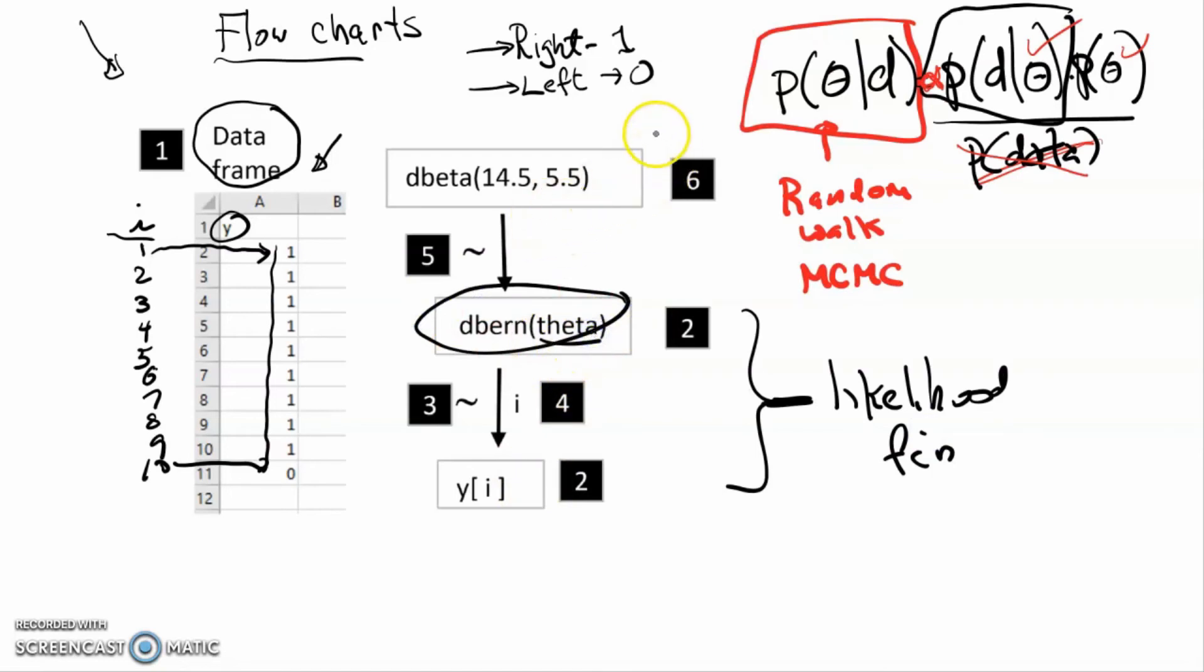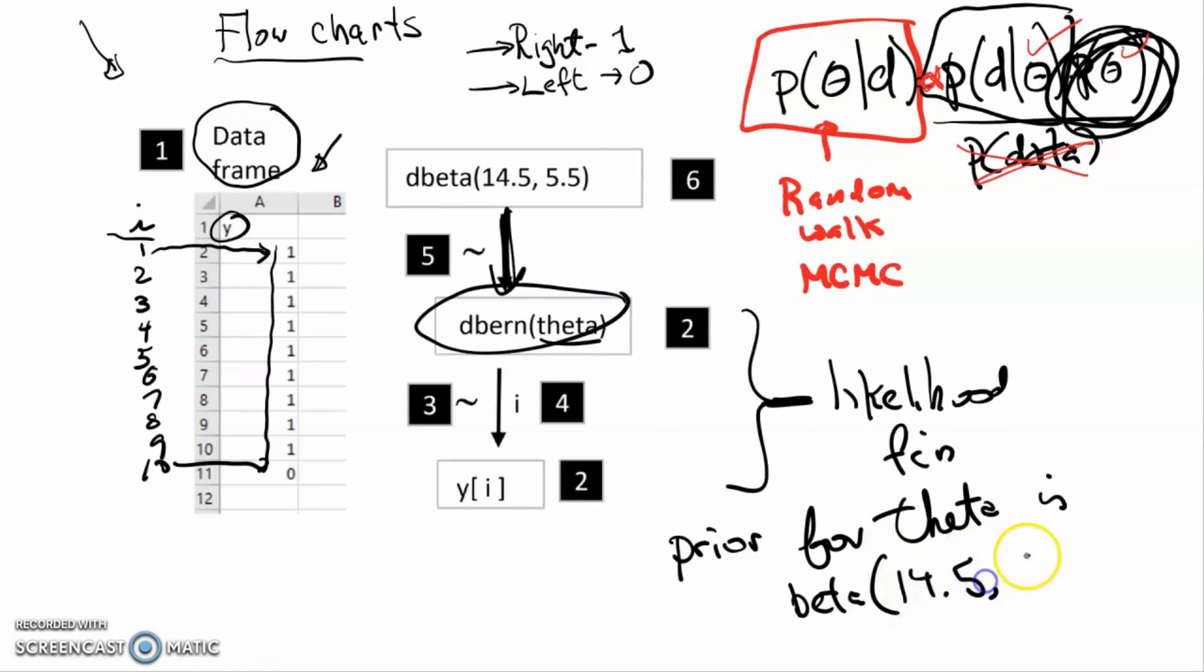What we've got here in this arrow is a definition of the prior. So the prior for theta is a beta distribution with parameters 14.5 and 5.5. And you notice it's d beta and d Bernoulli, and that's because the d is part of the R syntax.